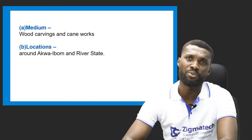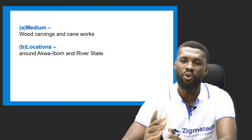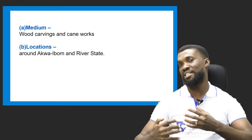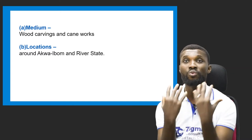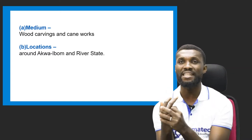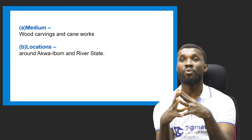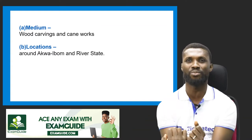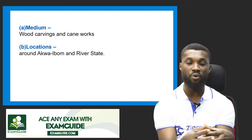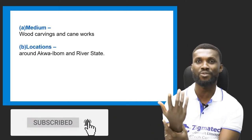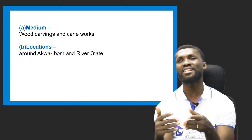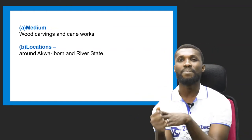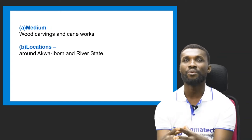Now let's look at the medium used by the Ibibio people. The Ibibio are known for carving — they carve a lot of works. The major medium used by the Ibibio is wood carving. They also do cane work: making chairs with cane, bags, and similar items. They are crafty by nature. They are located around Akwa Ibom, closer toward Rivers State.